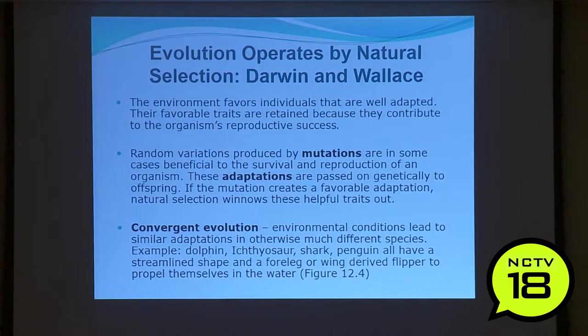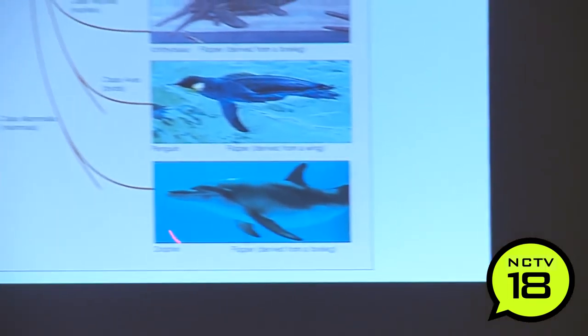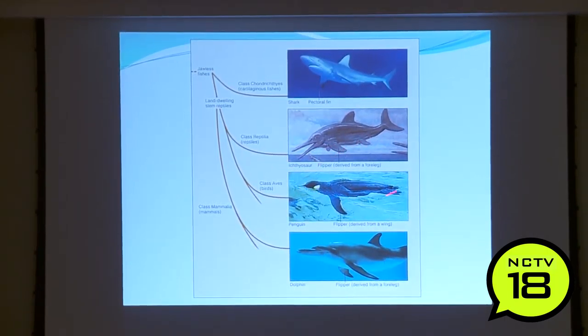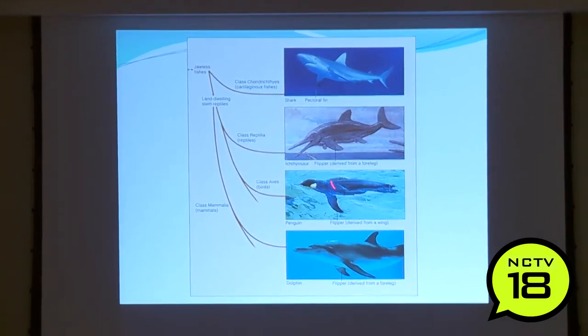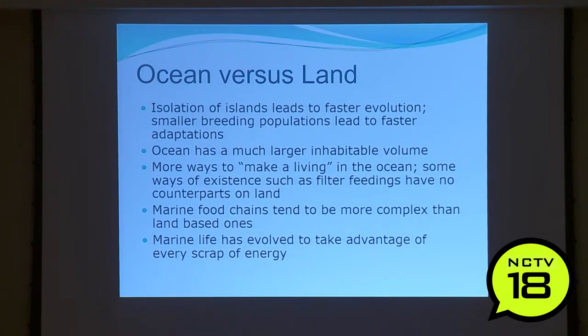Convergent evolution is when environmental conditions lead to similar adaptations in very different species. The dolphin, ichthyosaur, shark, and penguin all have a streamlined shape and a four-legged or wing-derived flipper to propel themselves through the water. They're on different phylogenetic trees — marine mammals, birds, reptiles, and sharks — yet all have this fusiform, streamlined shape with flippers adapted to propel them forward. That's convergent evolution.